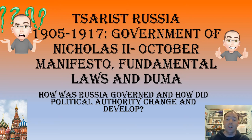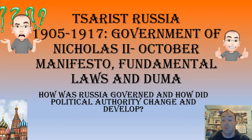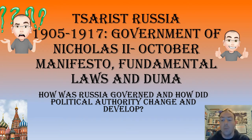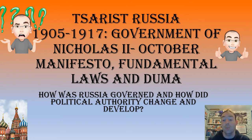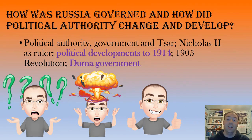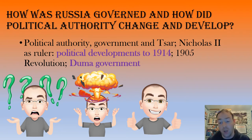Hello everybody and welcome to Alan History Nerd. In this video we are looking at political authority and government of Nicholas II. The main focus is the contents and outcome of the October Manifesto and the Four Dumas, and how they worked - or to be more accurate, how they didn't work. This fits in with the key question from the spec on how Russia was governed and how political authority changed and developed.